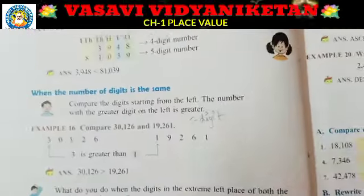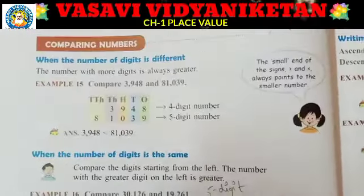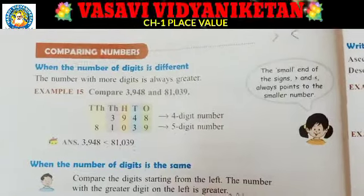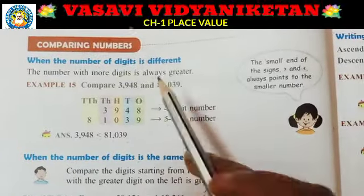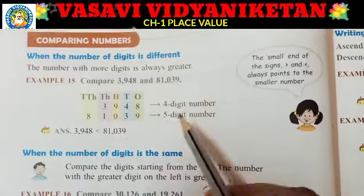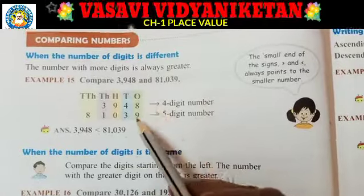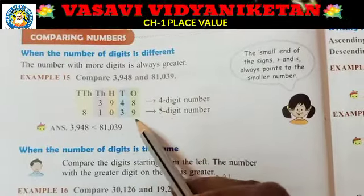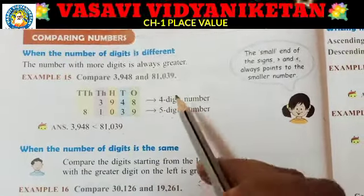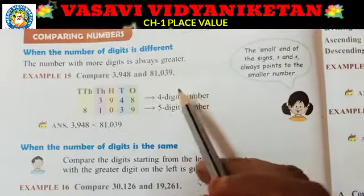In yesterday's class I explained you about comparing numbers. Yes or no? So first, example 15: when digits are more, equal digits have a greater number. Fewer digits have a smaller number. Yes or no?